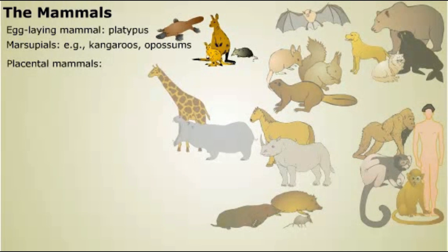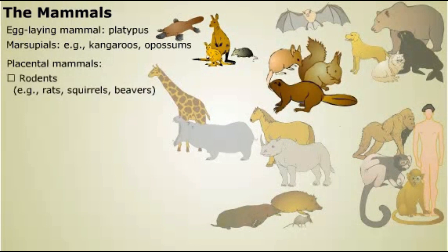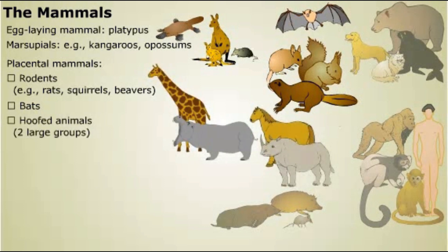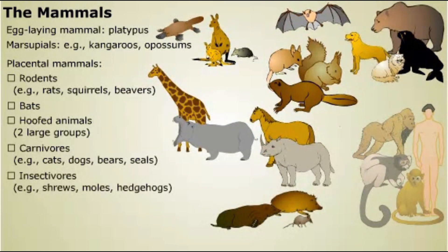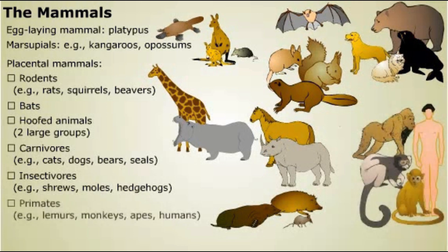Some important groups of mammals are: rodents, such as rats, squirrels, and beavers; bats, which are the only flying mammals; two large groups of hoofed animals; carnivores, such as cats, dogs, bears, and seals; insectivores, such as shrews, moles, and hedgehogs; and the group to which humans belong — the primates, which also includes lemurs, monkeys, and apes.